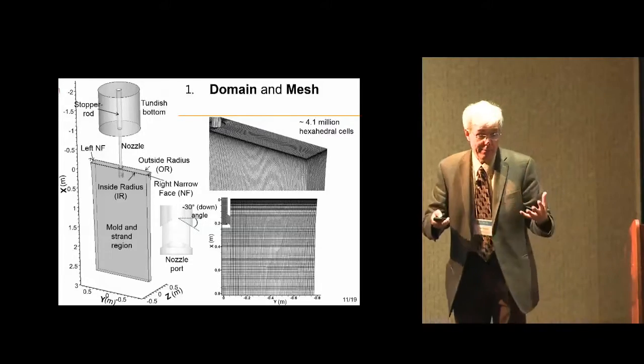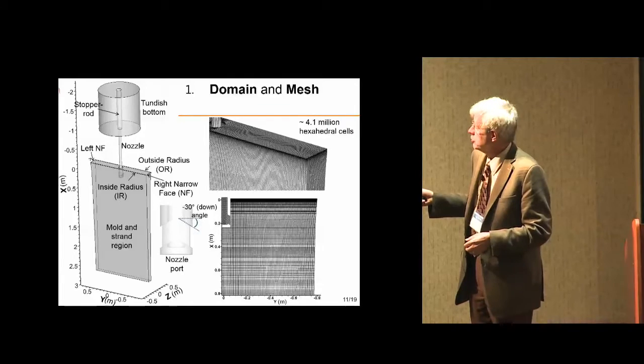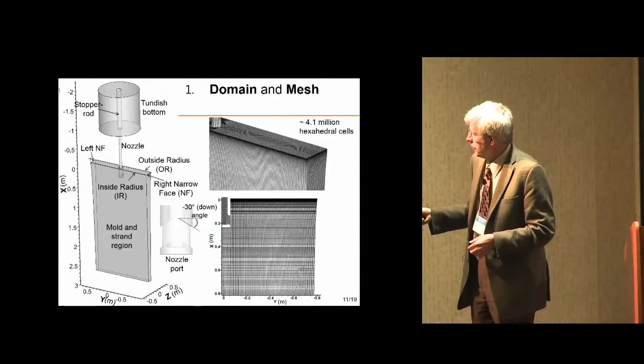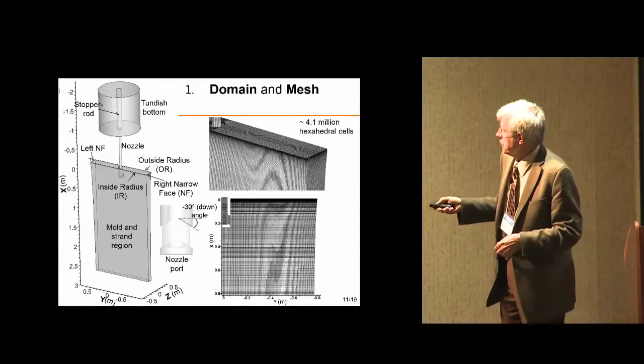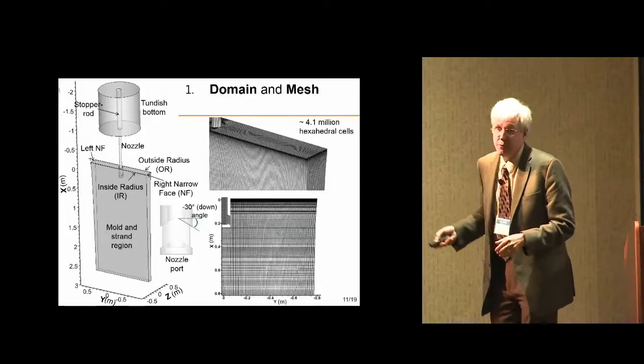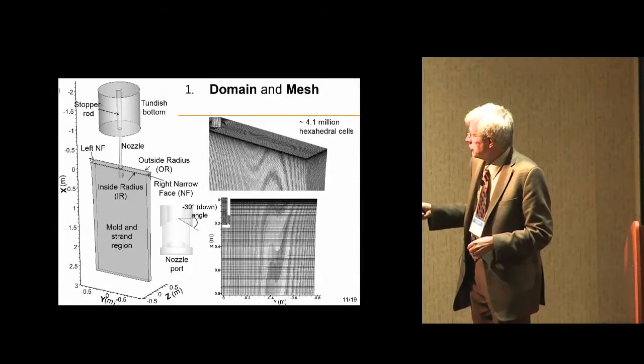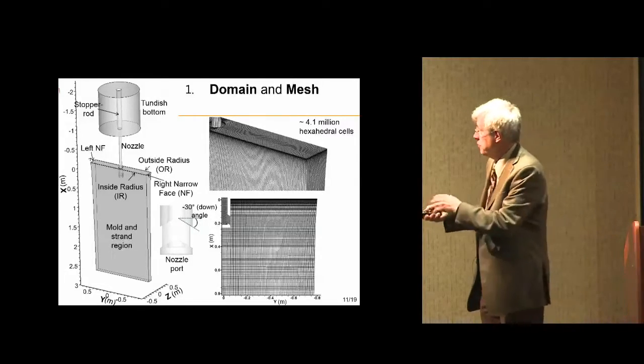Here's a mesh, an example of the meshes we're using. We use part of the bottom of the tundish, the nozzle that goes down into the mold with bifurcated ports and a bottom—it's a complicated geometry—and the liquid portion of the molten pool in the mold. We make the boundary condition be the solidification temperature so we don't have to model the solid in this model.